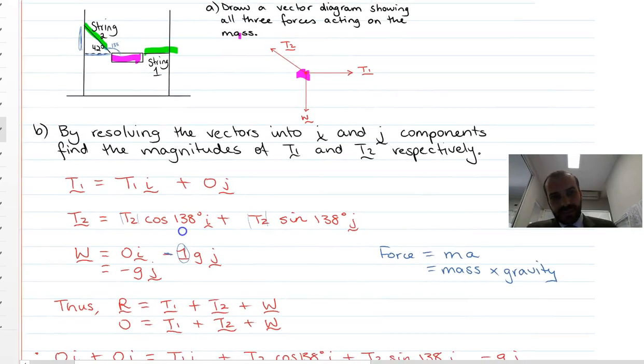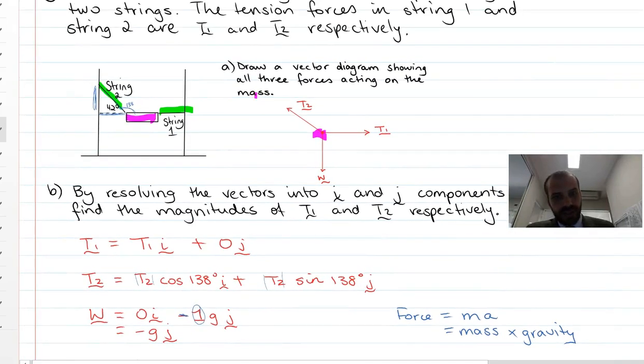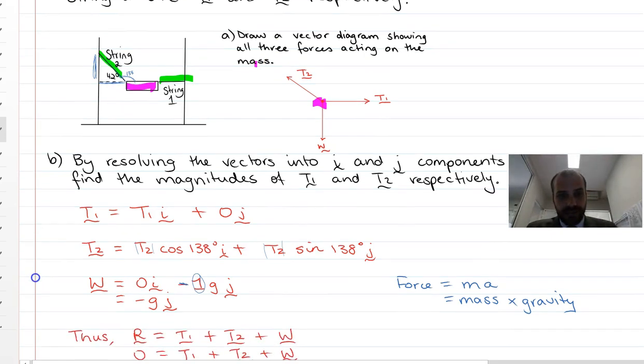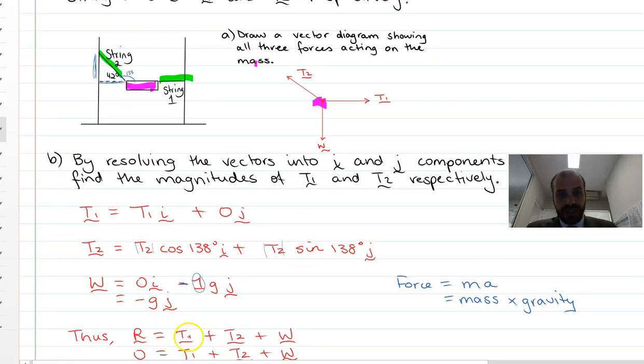Now, looking at our picture again, this weight's not going anywhere. It's suspended. So these forces, the resultant of those forces is zero. So we can say that r equals t1 plus t2 plus w equals zero.